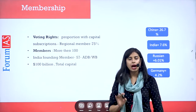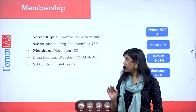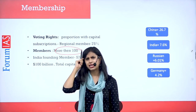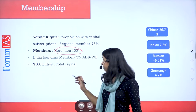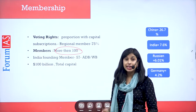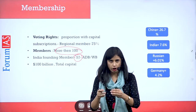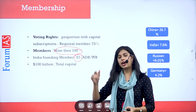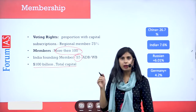Although AIIB is focused on regional development, its membership includes both regional and non-regional countries. Overall, more than 100 countries are members, both regional and non-regional. India is a founding member. In total, 57 countries were founding members. The total capital of AIIB is 100 billion dollars.